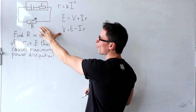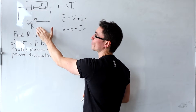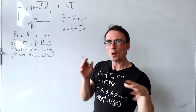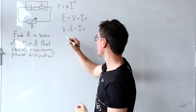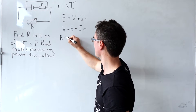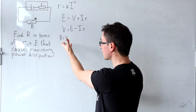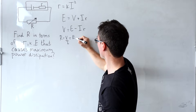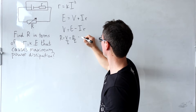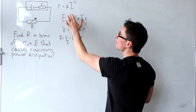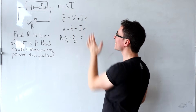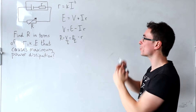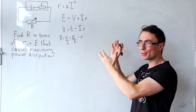Simply rearranging for V, we get that V will be equal to E minus I times R. Remember the PD across this resistor will depend on the value of the resistance which we can vary. Because R equals V over I, we can say that the resistance across it will be equal to E over I minus R, and remember R is just equal to K times I squared, so we can substitute this into those equations.